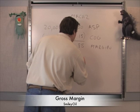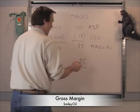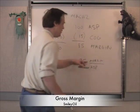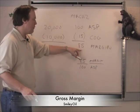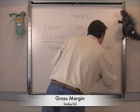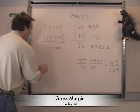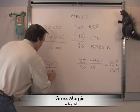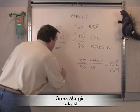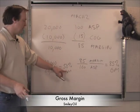Now we take that margin and divide it by the Average Selling Price to get Gross Margin (GM). For every dollar we sell, how much do we make in margin? The software example gives us $85 / $100 = 85% gross margin. The car example gives us $10,000 / $20,000 = 50% gross margin. Car companies would actually kill to have 50% gross margins — they're nowhere near that high in reality.